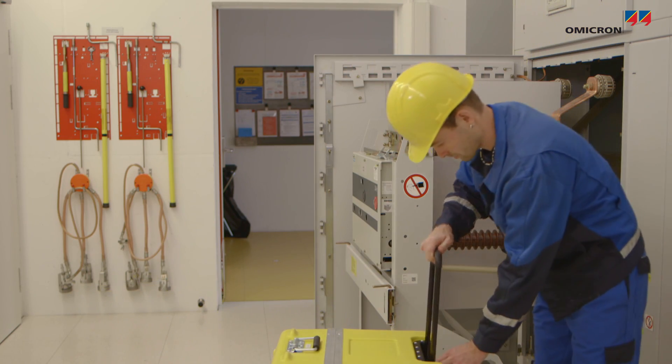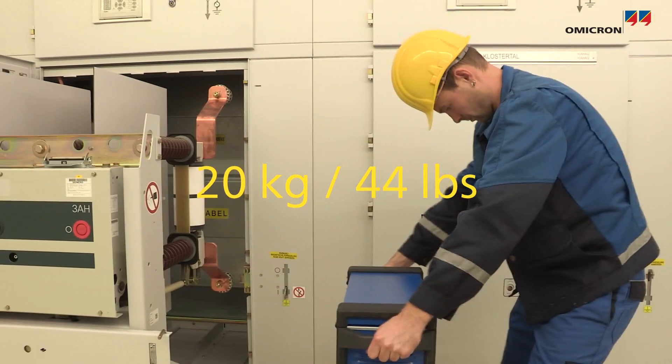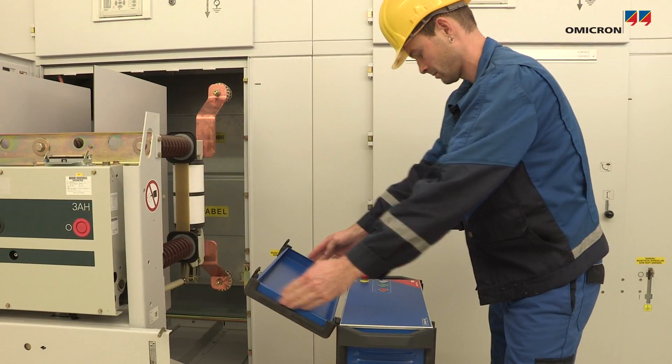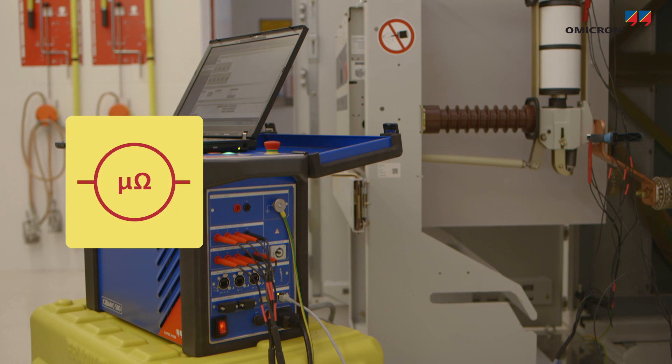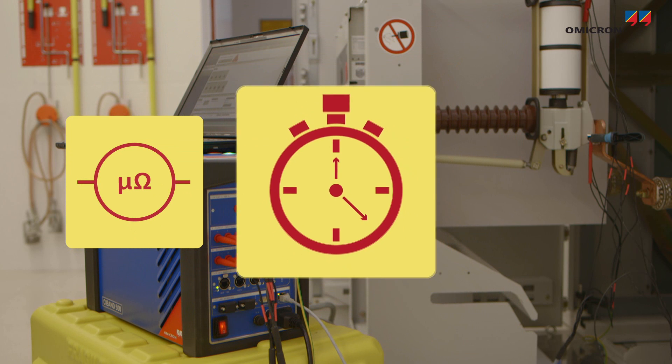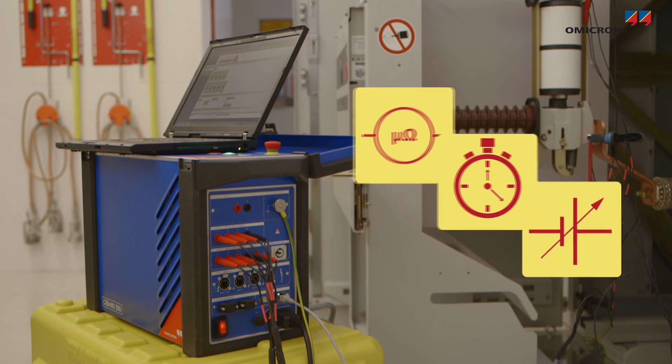The same approach has been followed with Omicron Sabano 500, which combines all of the equipment that's needed for circuit breaker testing in one device. A micro ohm meter, a multi-channel timing unit, a controllable DC supply to power drive motors and trip and close coils.